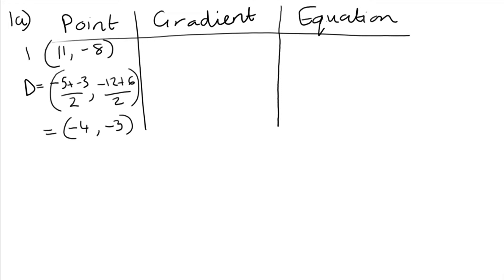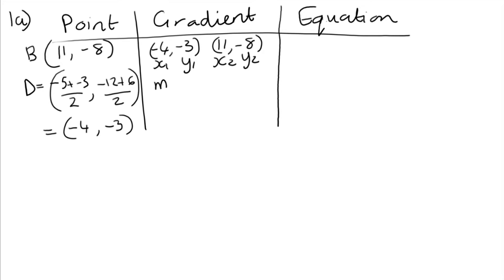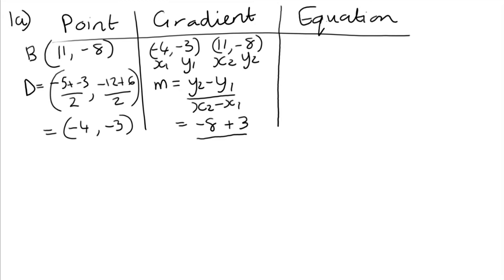I tend to use the original point B so I know it's definitely correct. For the gradient, write the two coordinates down - I like to put the smaller coordinate first so you don't get too many negative signs. The gradient is (y2 - y1)/(x2 - x1). When you minus a minus you add, so it's (-8 + 3)/(11 + 4) = -5/15 = -1/3. There are no perpendicular gradients involved when finding a median.